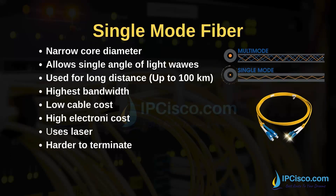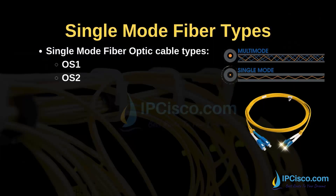Another fiber optic cable type is single-mode fiber optic cable. It has a narrow core diameter and allows a single angle of light waves. Single-mode fiber optic cable is used for long distances, up to 100 kilometers. The bandwidth is higher. It has low cable cost but high electronic cost. Single-mode fiber optic cable uses laser and it is hard to terminate, whereas multimode is easier. There are two types of single-mode fiber optic cables: OS1 and OS2. OS stands for optical single-mode.